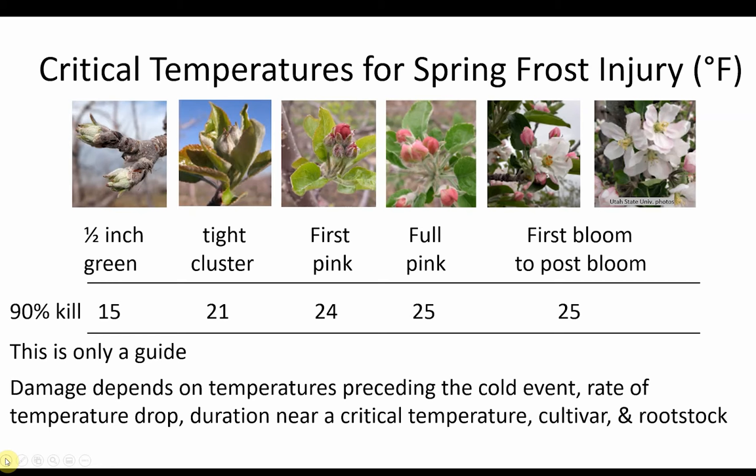For example, at one-half-inch green, about 90% of the flower buds may be injured at 15 degrees Fahrenheit. From full pink stage to petal fall, the same amount of bud mortality might occur at 25 degrees. These temperatures are only meant to be an estimate of potential bud kill, as the actual amount of injury is also dependent on the conditions preceding the low temperature event, the rate of the temperature drop, the length of time at sub-freezing temperatures, the cultivar, and the rootstock.